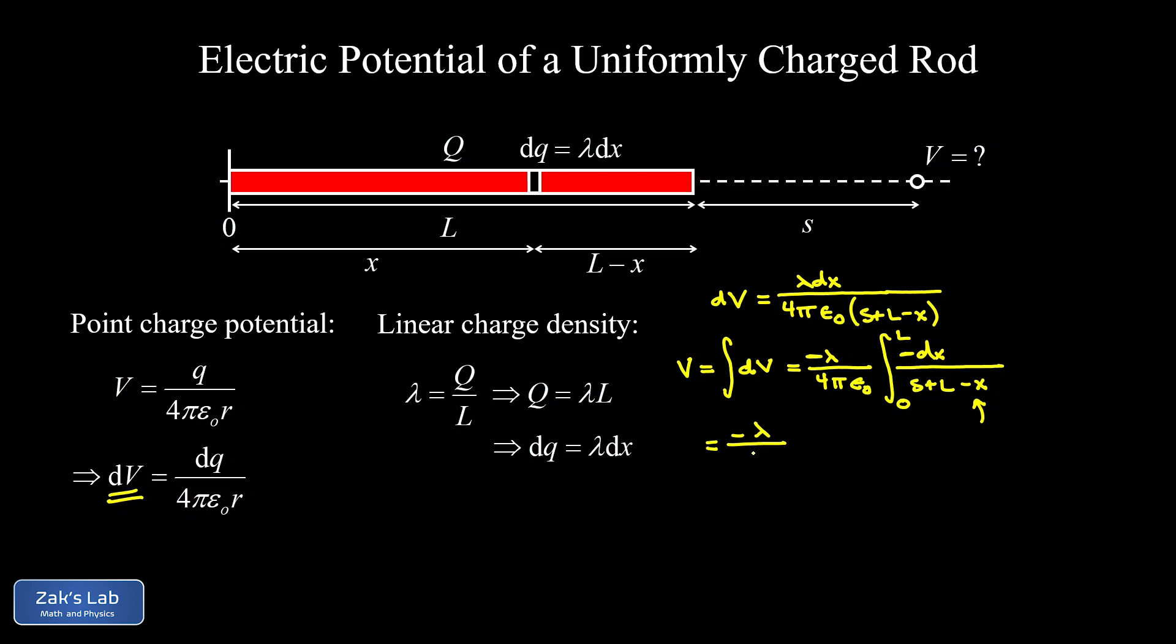So our constants out in front now are negative λ over 4πε₀. And then my antiderivative is a natural log of that denominator. And we need to evaluate this thing from 0 to L. Notice I didn't put absolute value bars around the argument of the natural log function. This is typical for a real application in physics. If I look in that argument, I know that L is bigger than x. So L minus x is always going to be non-negative, and I'm adding an S to that. So I have positive numbers in the argument of the natural log function. I don't have to worry about the absolute value bars.